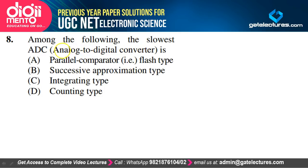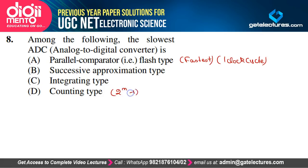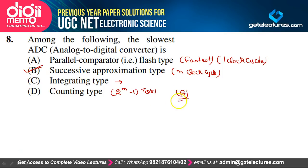Among the following ADC types, the slowest is: parallel comparator (flash type), successive approximation (SAR), integrating type, or counter type. Flash type ADC is the fastest, taking only one clock cycle. Counter type takes 2^n − 1 clock cycles. SAR type takes n clock cycles. Dual slope integrating type would be the slowest overall, but among these options, SAR type ADC is the slowest. So option B (successive approximation) is correct.